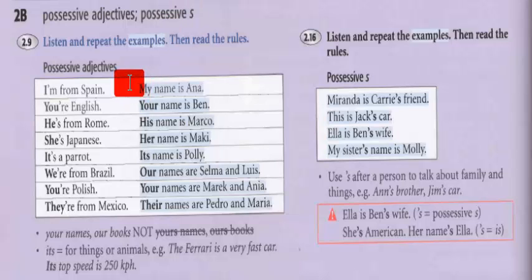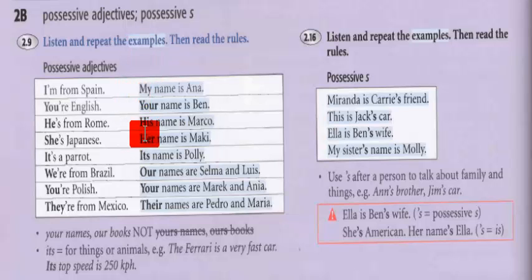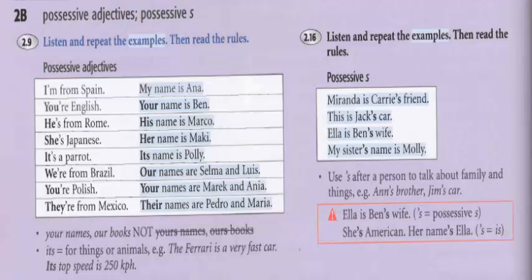Remember that we use possessive adjectives junto — together with a noun, com um nome, com um substantivo. Coincidentemente, o noun aqui nesse exercício foi name: my name, your name, his name, her name. But tenha sempre em mente que possessive adjectives estão sempre acompanhados de um noun, de um substantivo. Eles têm que sempre estarem acompanhados de um substantivo.